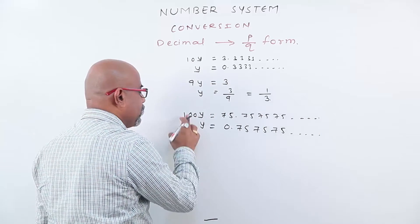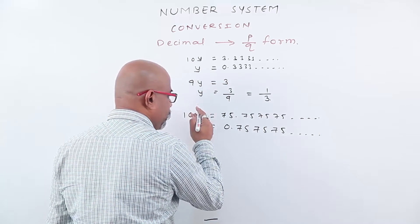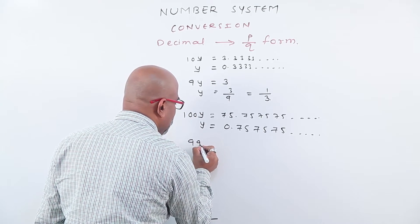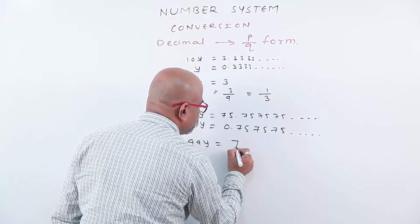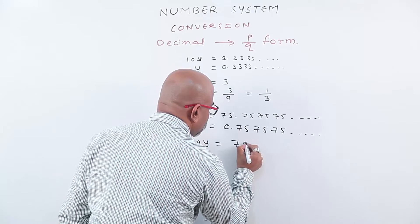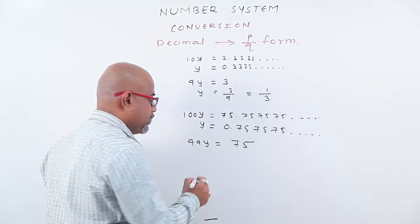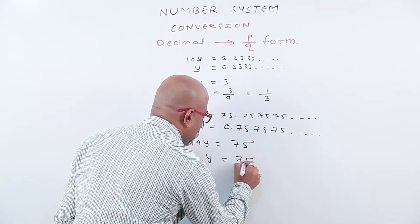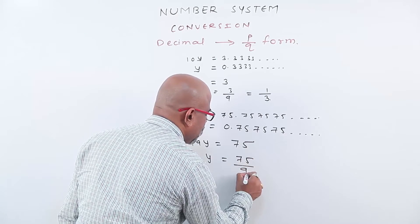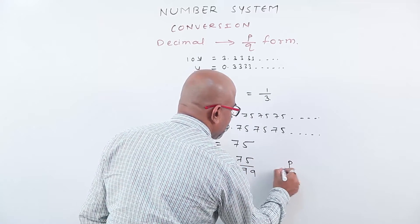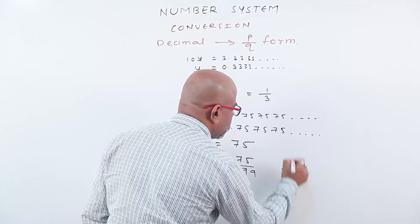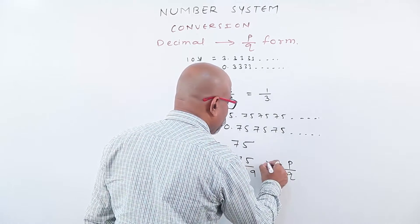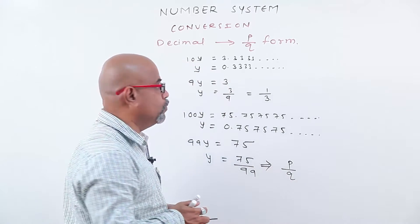Now, subtracting this second equation from first, we get 99y equals to 75. That is y equals to 75 by 99. This is of the form p by q.